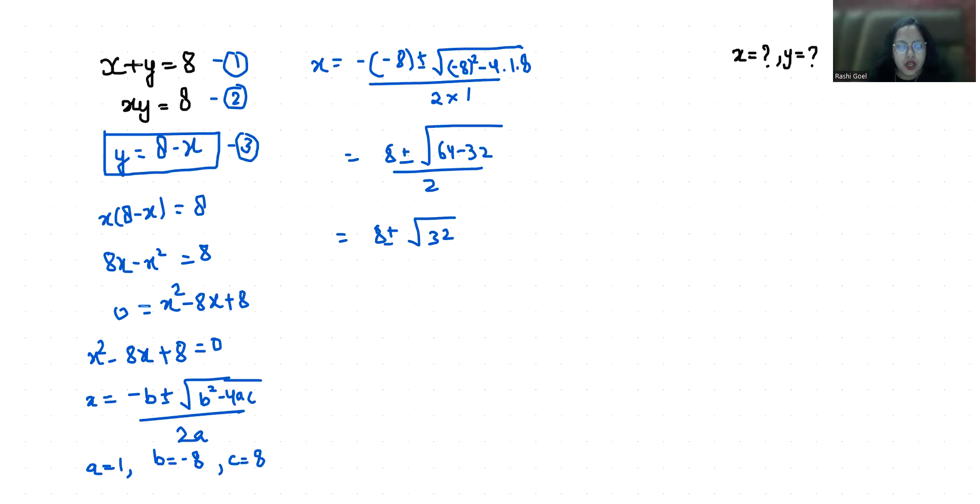So 8 plus minus 4 root 2 over 2. So if I take 2 as common, 4 plus minus root 2 over 2. So these are the two values of x. Let's recall y equals 8 minus x.